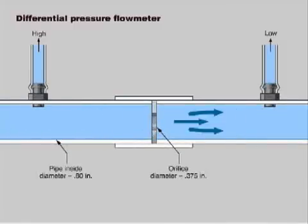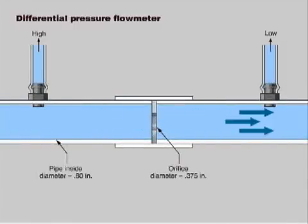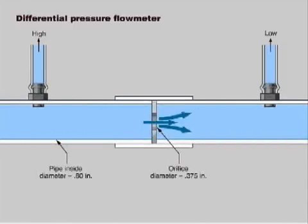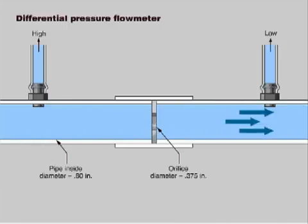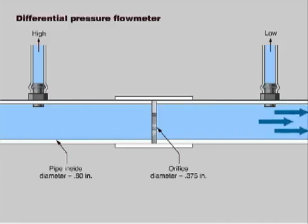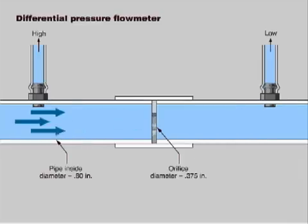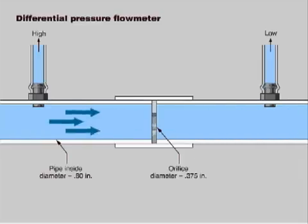The concept is very simple. If you place a restriction in the flow, there will be a pressure loss that is proportional to the flow rate. The more fluid you try to jam through the restriction, the greater the pressure loss. So if you measure the differential pressure, you can use it to calculate the flow rate.